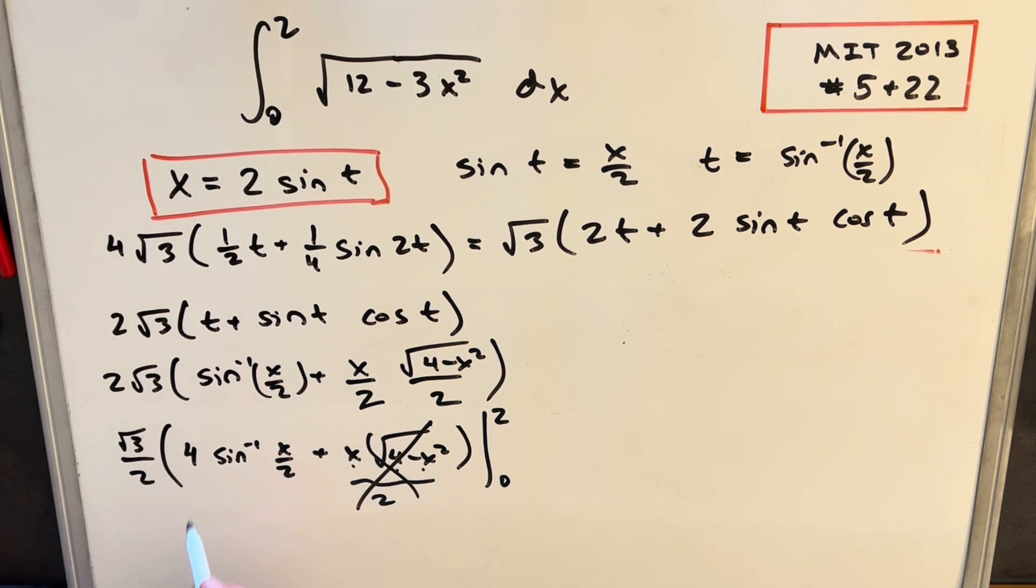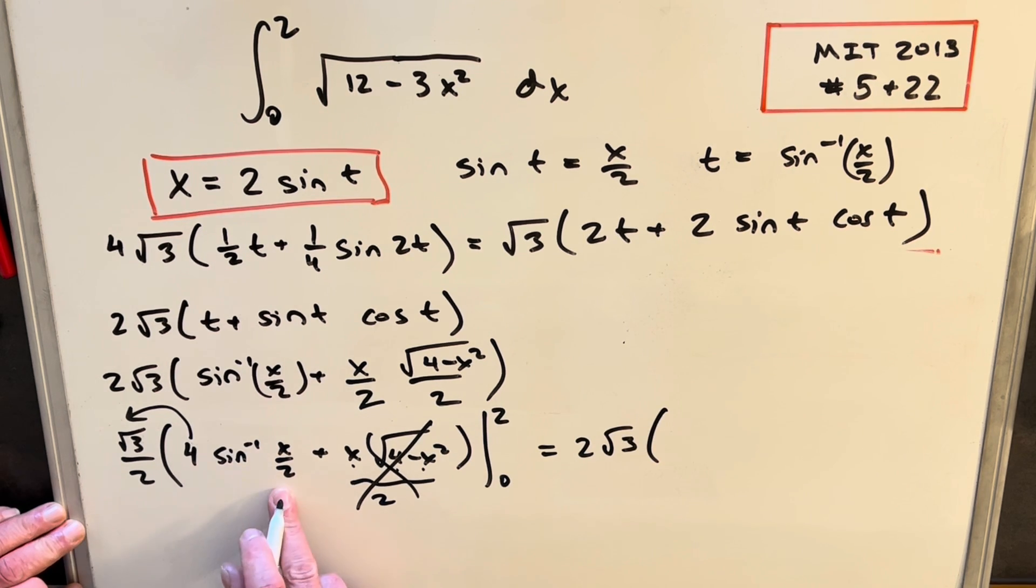And then before I evaluate this, I'm just going to take my 4 out front because the constant value is going to, that's not going to affect how we evaluate it. So doing that, we're going to have 2 square root of 3, and then we're going to evaluate sine inverse x over 2.